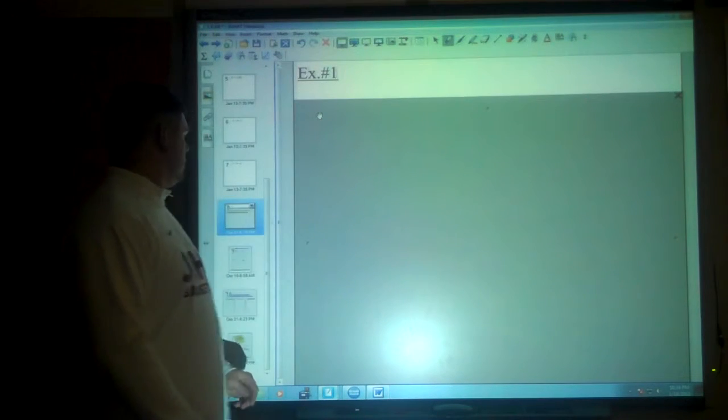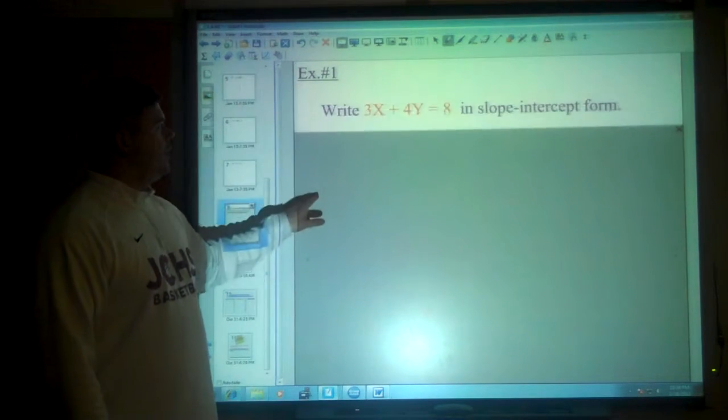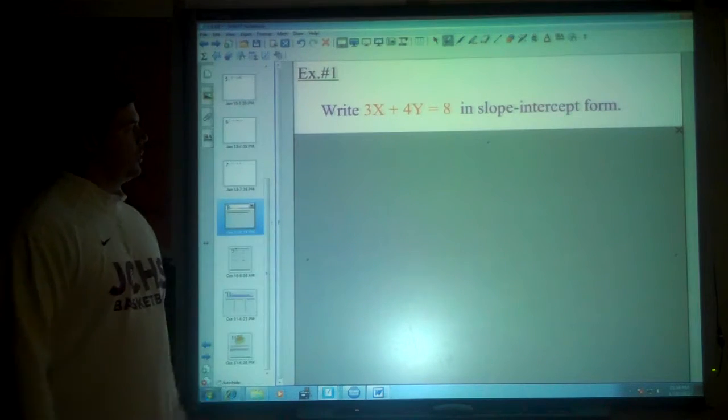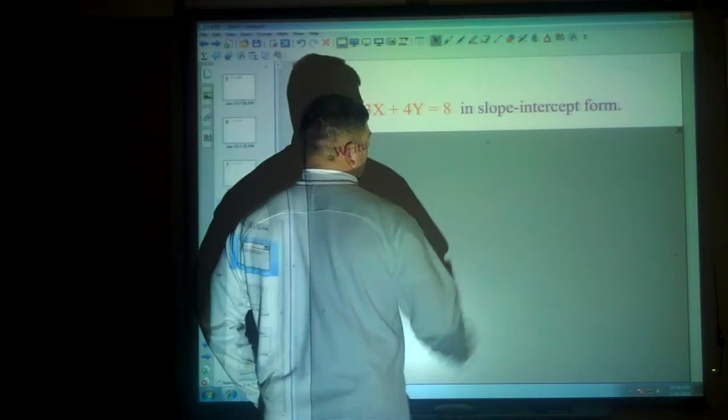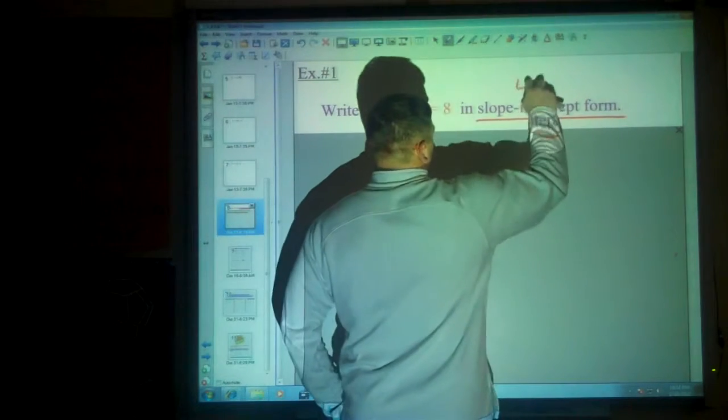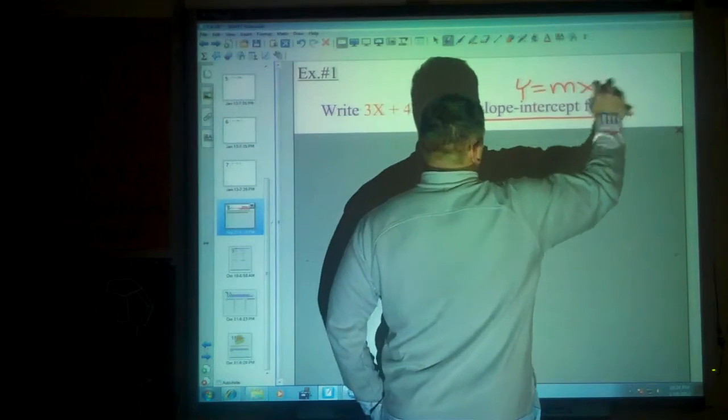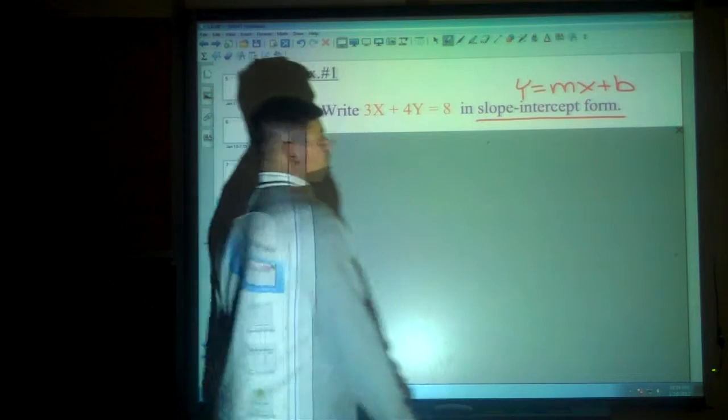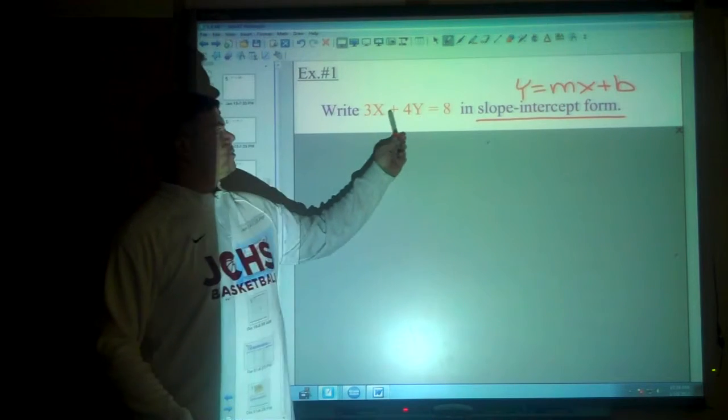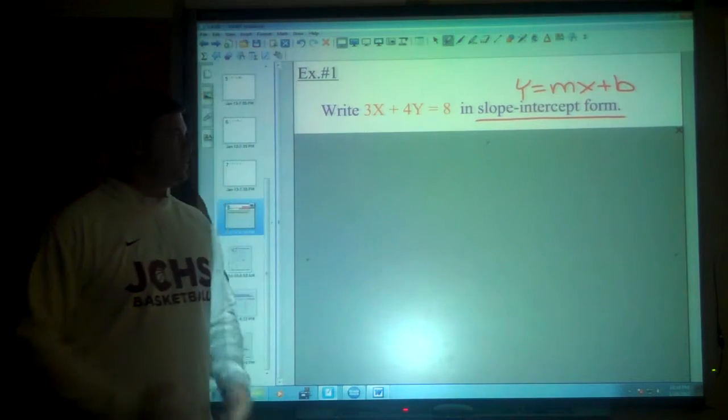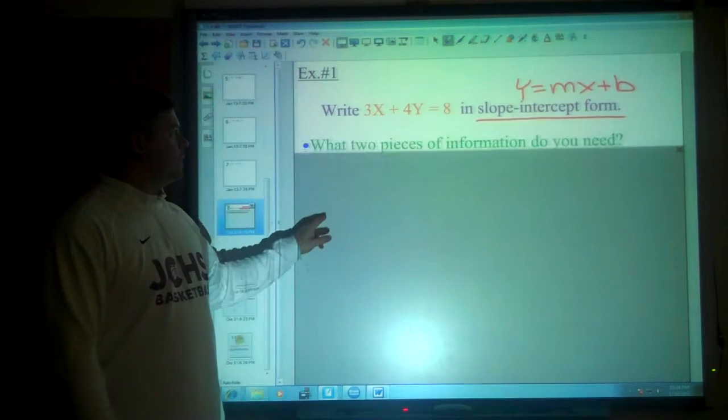We've got our first example, writing this in slope-intercept form. Now we know that slope-intercept form itself is y equals mx plus b. We are given 3x plus 4y equals 8, so definitely not the same form, but let's think about a few things.